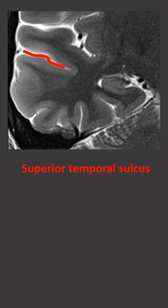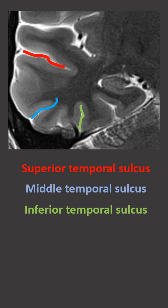The gyri are divided by the following sulci: the superior temporal sulcus, middle temporal sulcus, inferior temporal sulcus, and collateral sulcus.